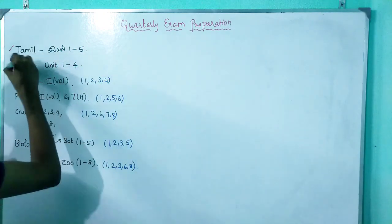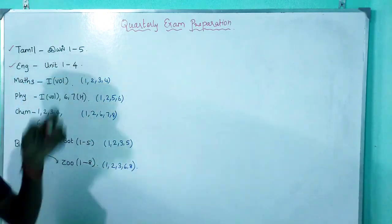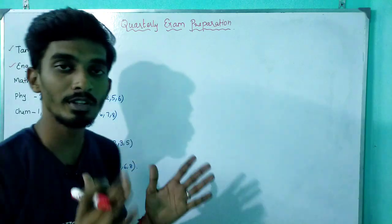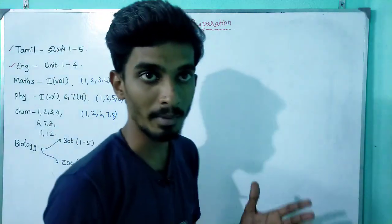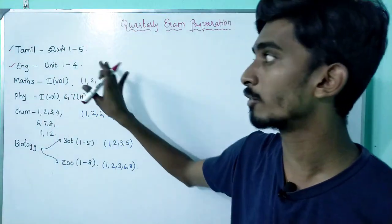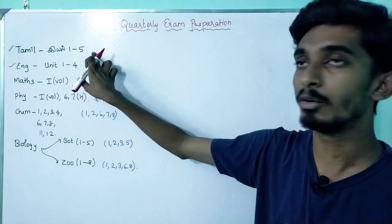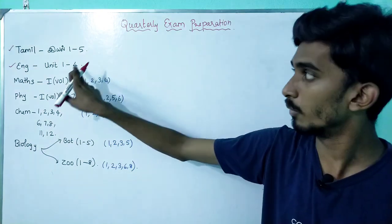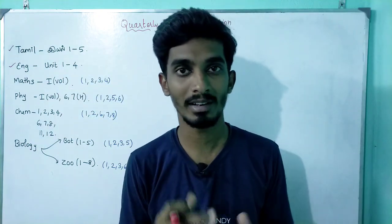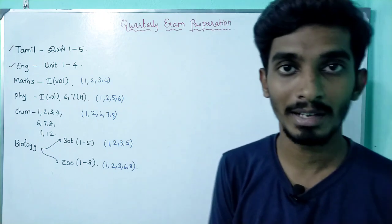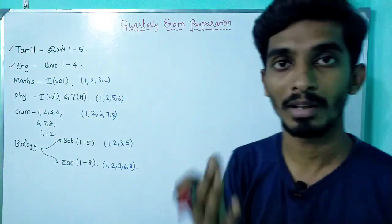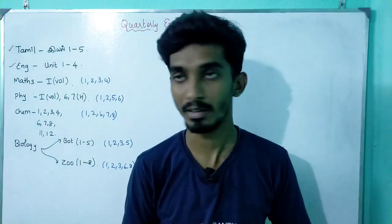First, let's talk about the portions — Tamil and English. In Tamil, there is one unit. In English, there are units 1 to 4. In this video, we have to read a lot. We're going to read some of them and answer some of them.